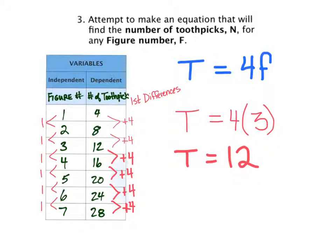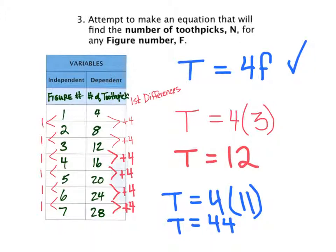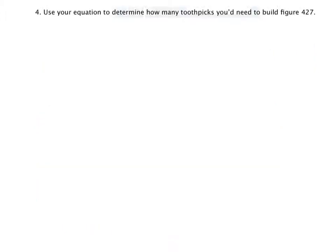We can try this again with another value. For example, let's say T = 4F, four times figure eleven. In this case we'll get forty four toothpicks, so we can tell that this equation definitely works for any figure number.